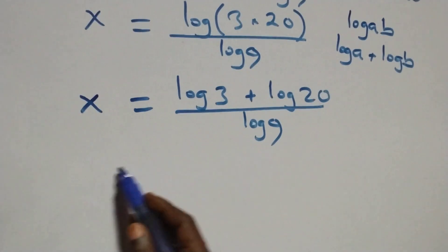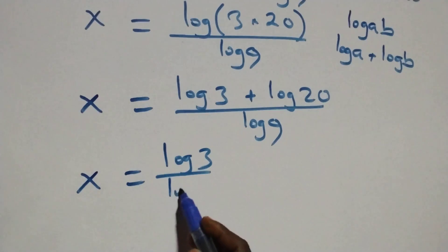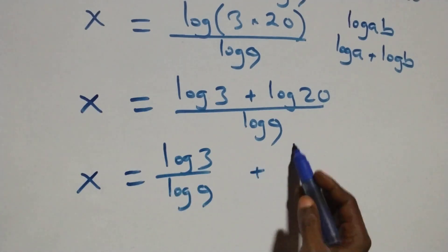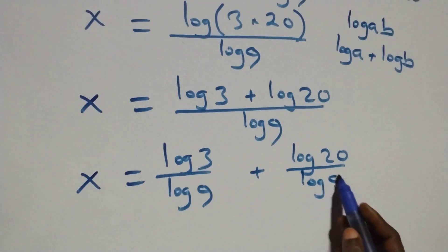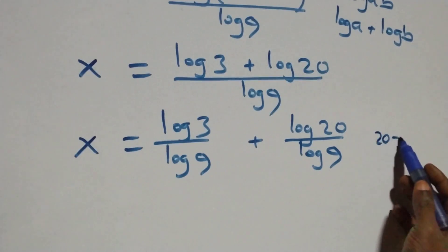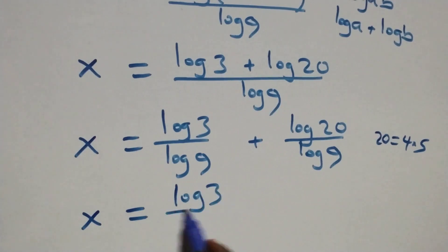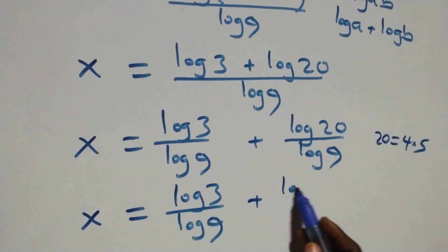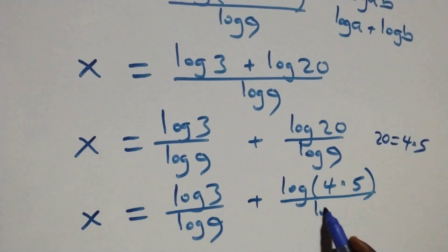We separate this into two fractions: x equals log 3 over log 9 plus log 20 over log 9. Also, 20 can be expressed as 4 times 5, which implies what we have becomes x equals log 3 over log 9 plus log(4 times 5) over log 9.